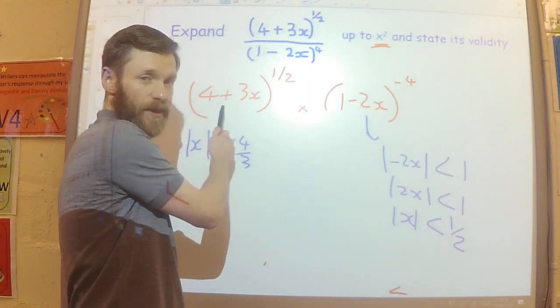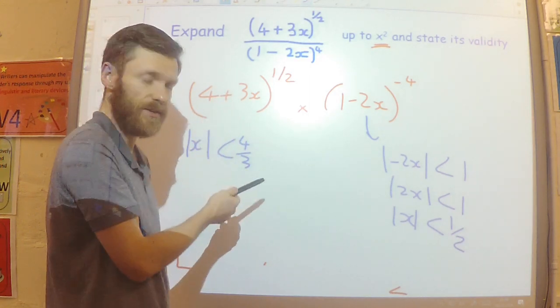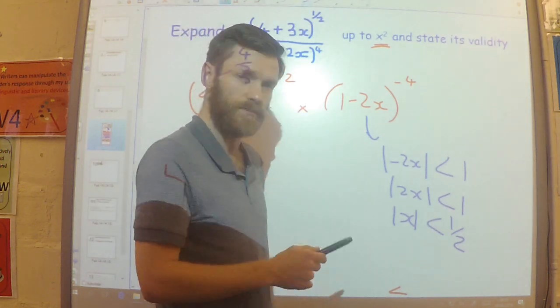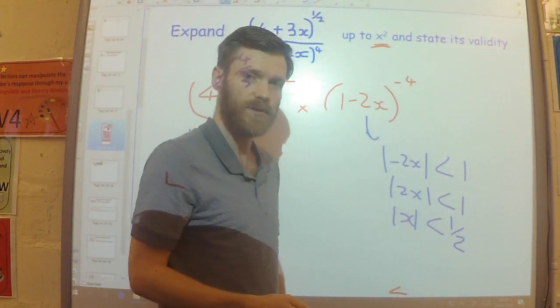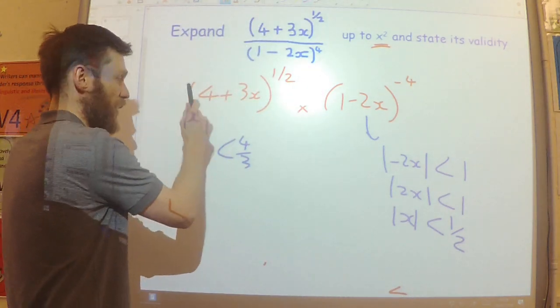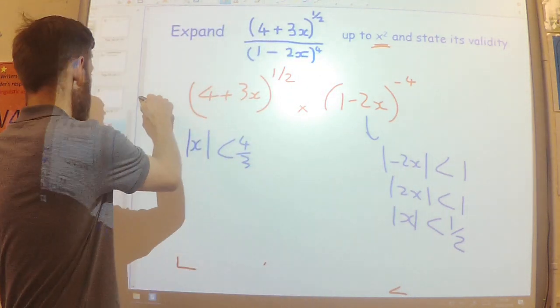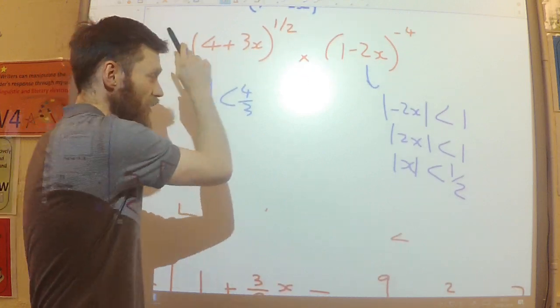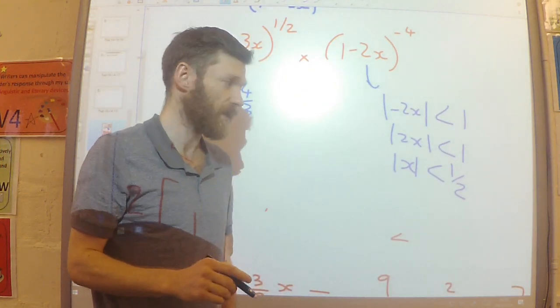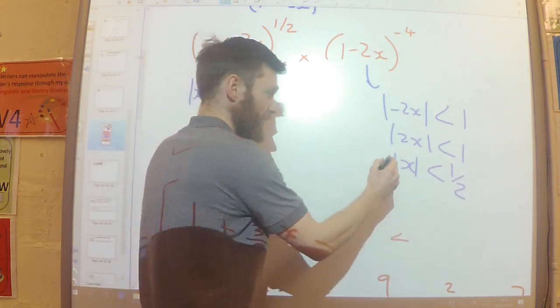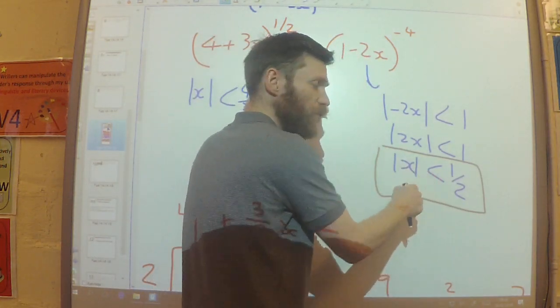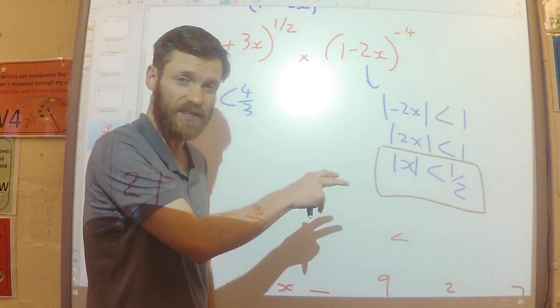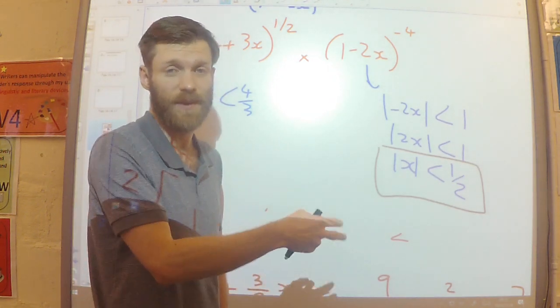So we've got two conditions here. In order for this expansion to be correct, to be valid, x has got to be less than 4 over 3. But in order for this expansion to be valid, x has got to be less than 1 half. Now, I have used both of these expansions in my final answer down here. So in order for this to be valid, both of these expansions need to be valid. So what that means is I am going to have to pick the narrower interval, the smaller interval, the more restrictive values of x as the values for x to be, for my expansion to be valid.